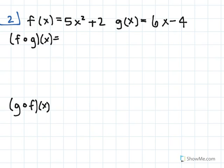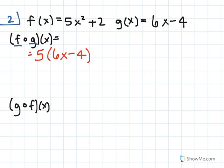Our second problem deals with composition of functions. We're given the function f of x equals 5x squared plus 2, and g of x equals 6x minus 4. We're then asked to find f of g of x and g of f of x. When we're doing composition of functions, we're going to plug our second function into all x's for the first function. So for f of g of x, we're going to take our function for f of x and plug g of x in for all of our x values. So we'll have 5 times the quantity 6x minus 4, squared, plus 2.